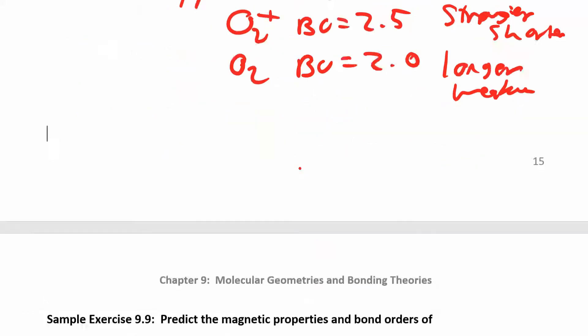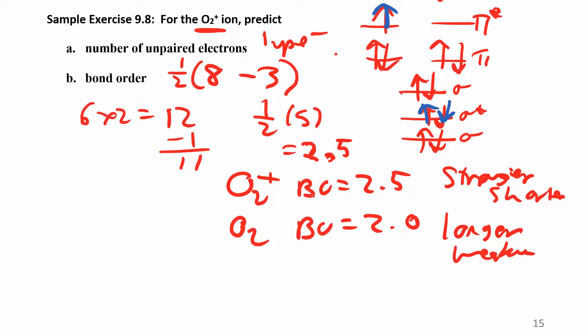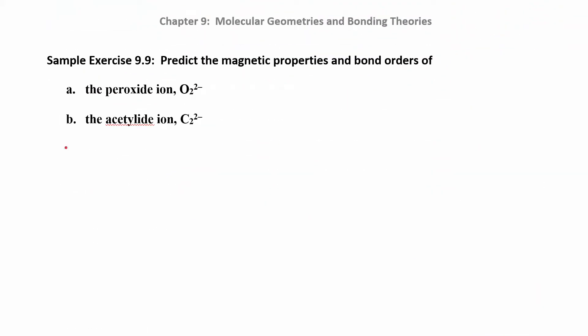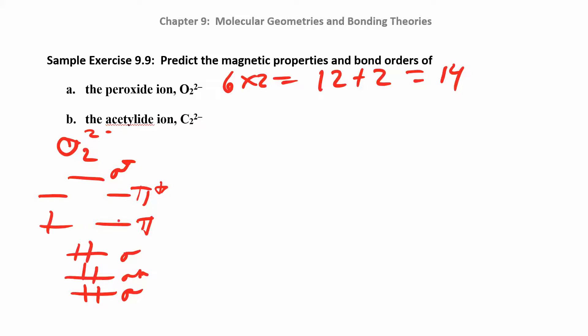Let's do another one. If we look at O2 2 minus, it's the same setup. I'll draw it again: sigma, sigma star, sigma, sigma star, pi, pi, pi star. That's O2. Now O2 2 minus means I had 12 electrons—each oxygen has 6 electrons, times 2 gives 12, plus 2 for the charge gives 14 electrons. So I'm going to fill: 2, 4, 6, 7, 8, 9, 10, 11, 12, 13, 14.